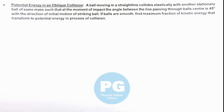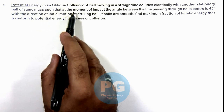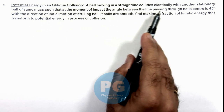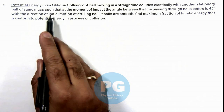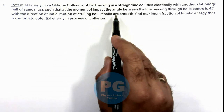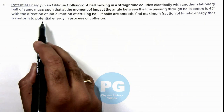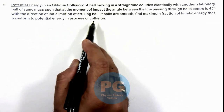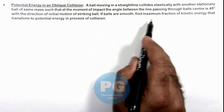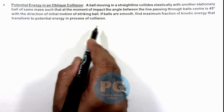In this illustration, we'll discuss the potential energy in an oblique collision. We are given that a ball moving in a straight line collides elastically with another stationary ball of the same mass, such that at the moment of impact the angle between the line passing through the ball centers is 45 degrees with the direction of initial motion of the striking ball. If the balls are smooth, we are required to find the maximum fraction of kinetic energy that transforms to potential energy in the process of collision.